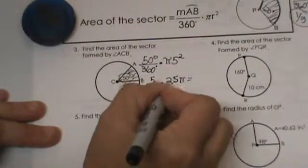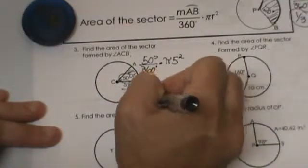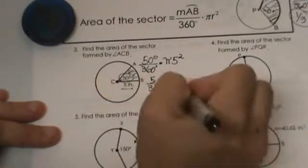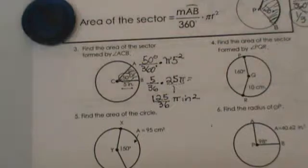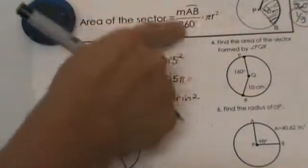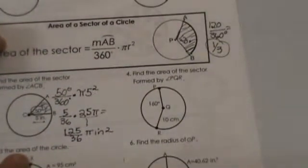So I am going to multiply 5 times 25 and that gives me 125 over 36 pi, and our units are inches squared. So that is how we would work that first one. Very straightforward, we are just plugging into our formula. Let's look at the second one here.